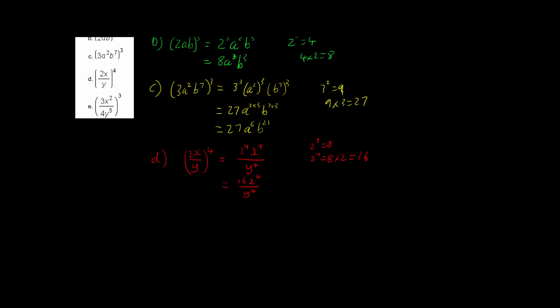Now looking at part e, we have 3x squared over 4y to the power of 5, all cubed. Again, we raise everything to the power of 3 on both the numerator and denominator. So we have 3 cubed x squared cubed divided by 4 cubed y to the power of 5 cubed.